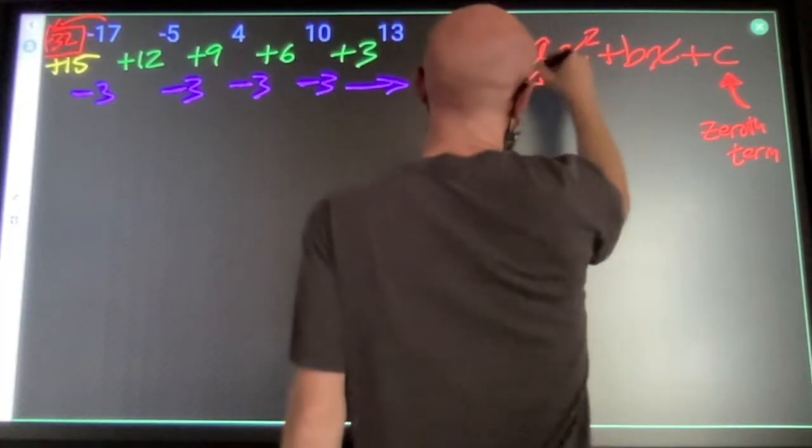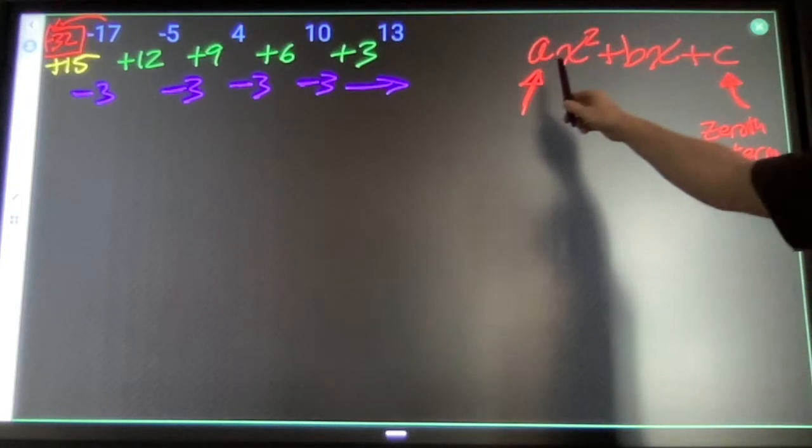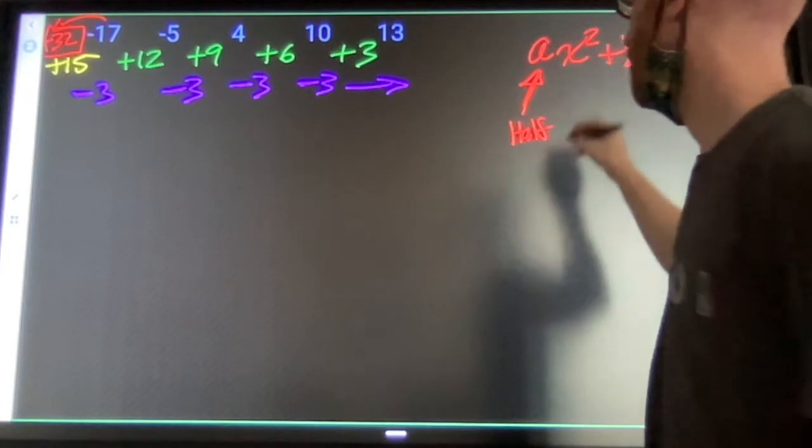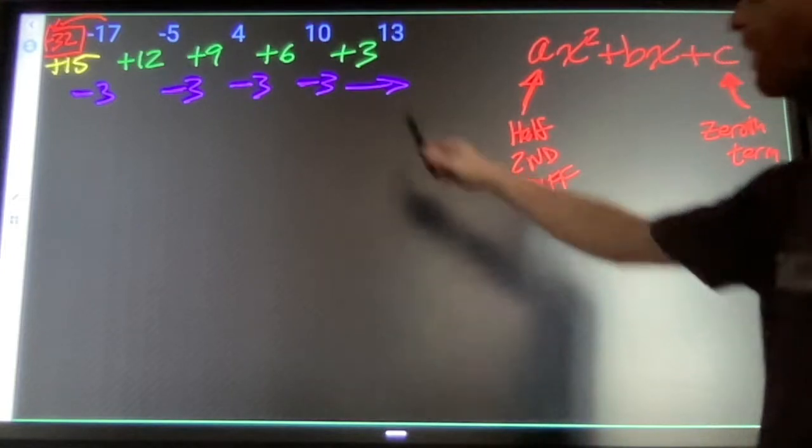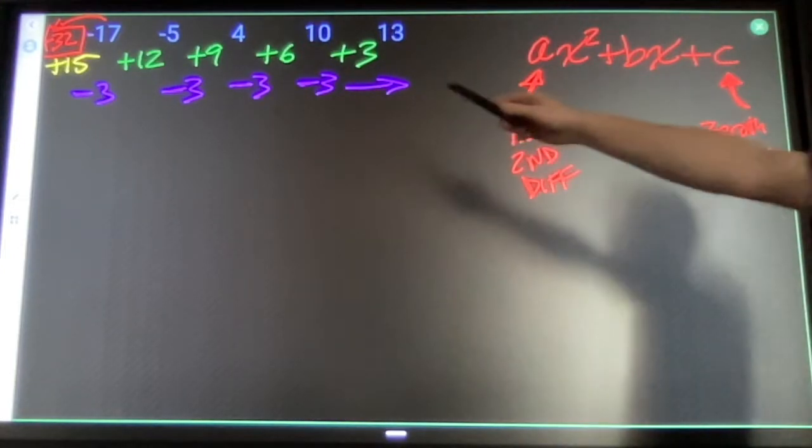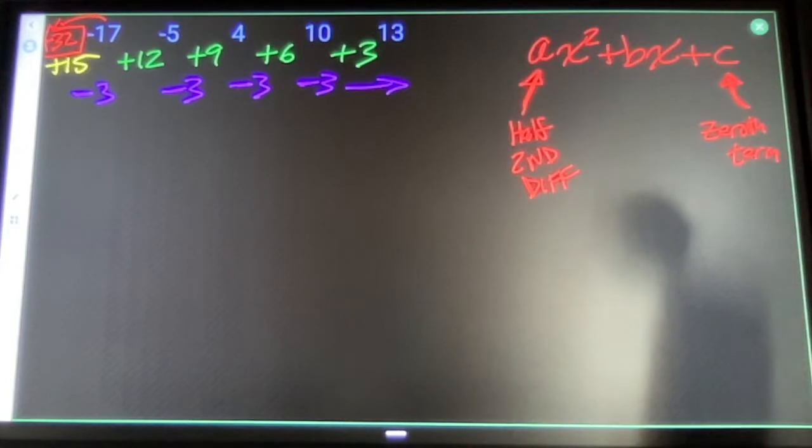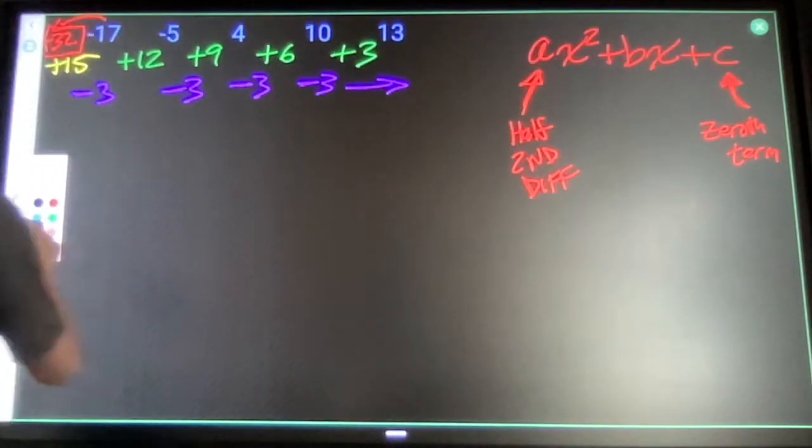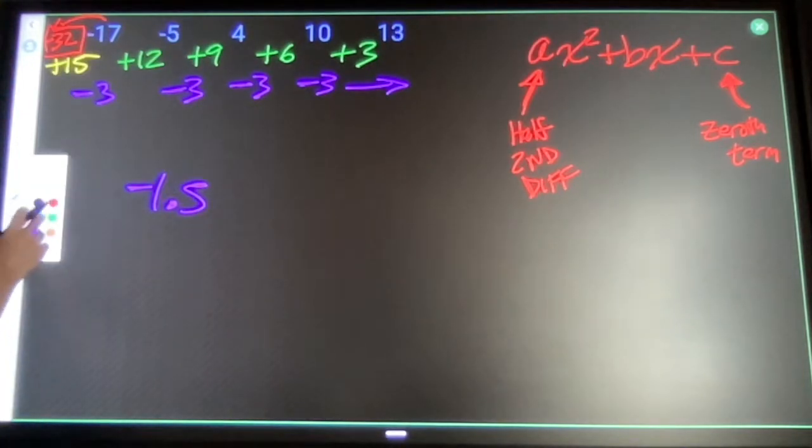After that, the new thing we figured out is that this leading term is always half of the second differences. So in our case, our second difference is negative 3, half of that will be negative 1.5. So I can start my formula like this: negative 1.5, that's half of 3, x squared.